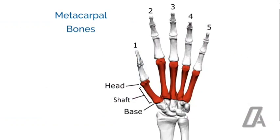Each of the five metacarpals has a base, shaft, and head. They lie between the carpals and phalanges, forming the skeletal framework of the palm.